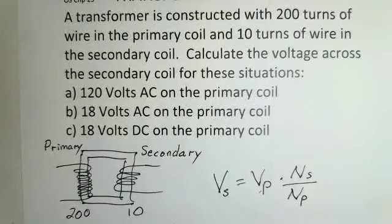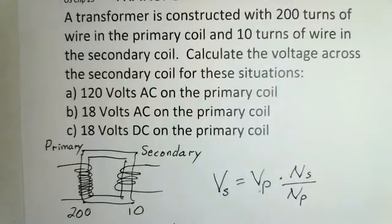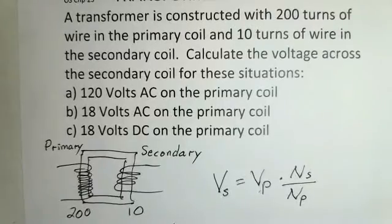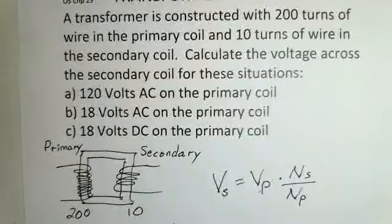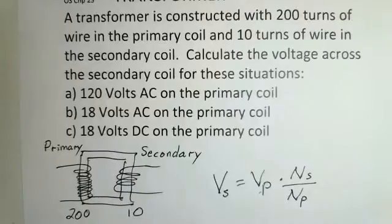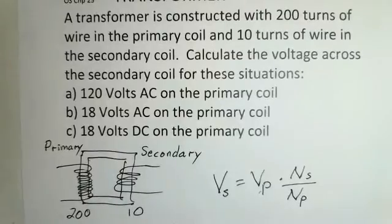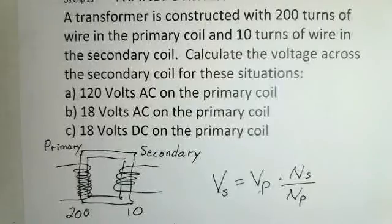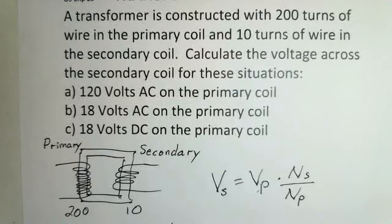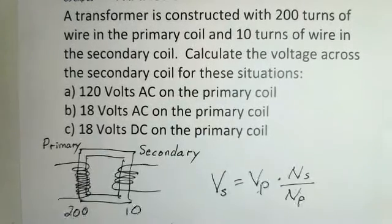That provides us with the calculation. This is pretty straightforward. So we have the voltage of the secondary. 120 volts is our AC voltage that's going in. The number of turns of wire on the secondary are 10, on the primary 200. Pull out your calculator or do this in your head. Cancel a factor of 10 and it would be 1 over 20. 120 divided by 20 is 6 volts. So we'd have 6 volts for the value.